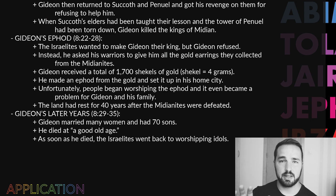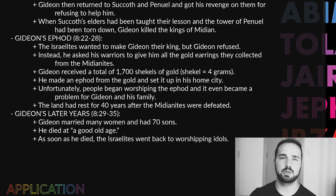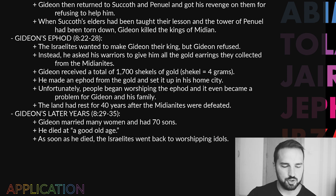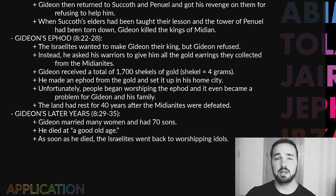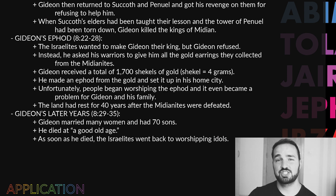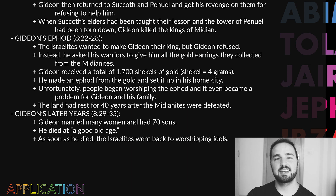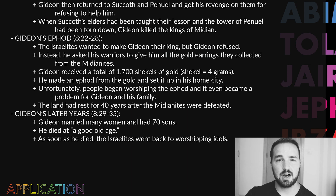We're told that the land of Israel had rest for 40 years following the defeat of the Midianite oppressors. The final section — verses 29 through 35 — covers Gideon's later years. Gideon married many women and had 70 sons. The text tells us he died at a good old age. But as soon as he died, the Israelites turned back again to their wickedness and started disobeying God. So that is Judges chapter 8.